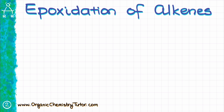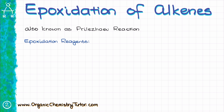We'll start by looking at the epoxidation of alkenes. Epoxidation of alkenes is a fairly typical reaction of alkenes that you've already seen in your course. It is also sometimes referred to as the Prelejaev oxidation or Prelejaev reaction. The most common epoxidation agent that you are going to see in your course is likely going to be MCPBA, which stands for metachloroperbenzoic acid. However, any other peroxy acid will work just fine.